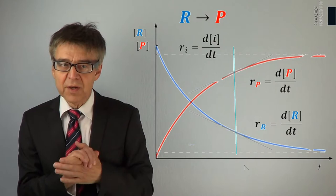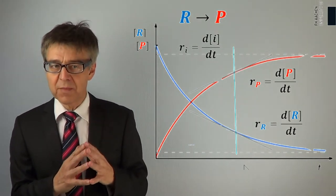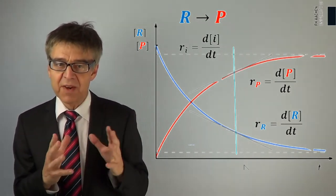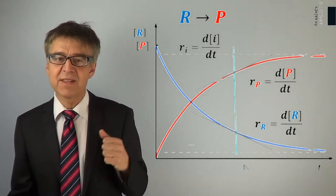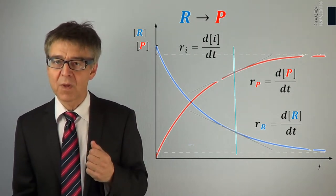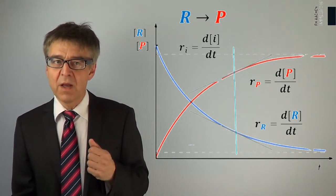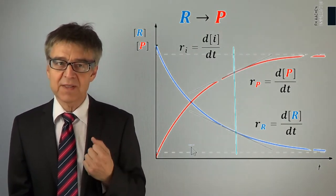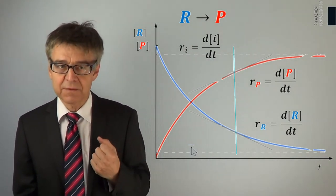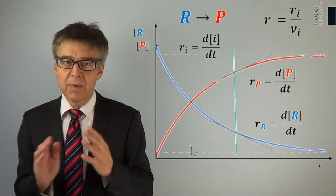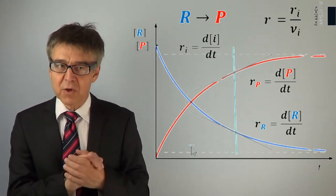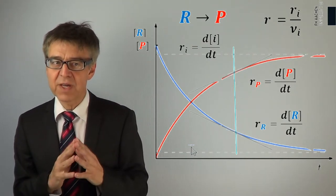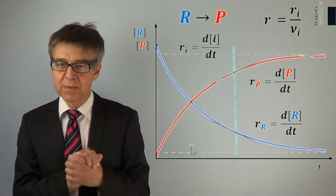The unit of the rates of decomposition and formation is concentration over time — that is, moles per liter per second, for example. Formation rates are positive and decomposition rates are negative. By dividing them by the respective stoichiometric number, we get the classic reaction rate R without any subscript.